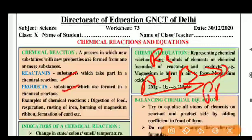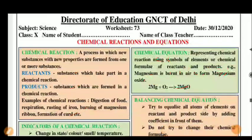Examples of chemical reactions include digestion of food, respiration, rusting of iron, burning of magnesium ribbon, and formation of curd. These are all examples of chemical reactions.